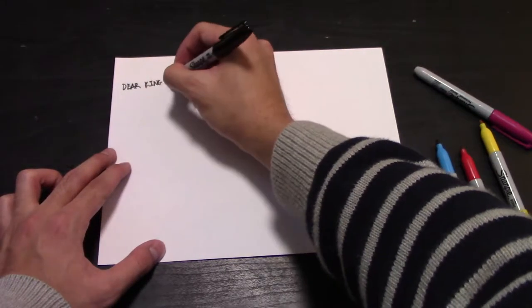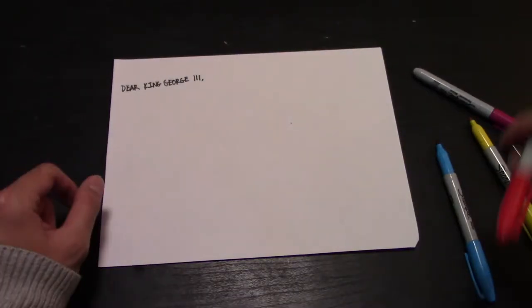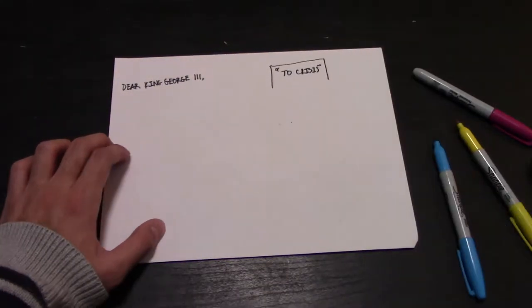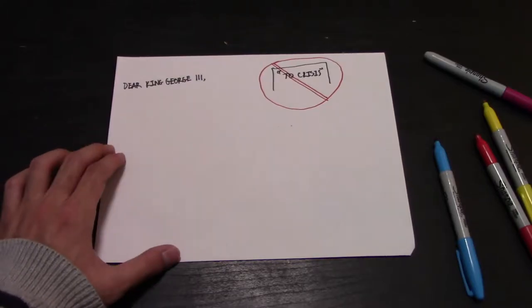Then, during the committee, you will be able to write crisis notes representing your actual character or country. A crisis note follows a general structure. First, you need to address your note to a specific person. Note that crisis notes that are not addressed will not be effective.